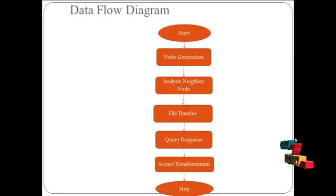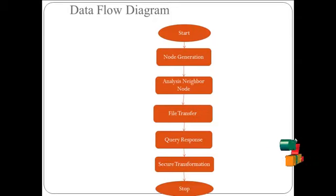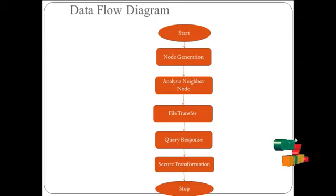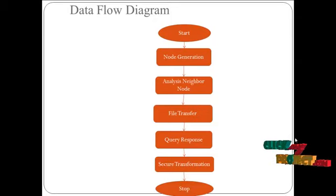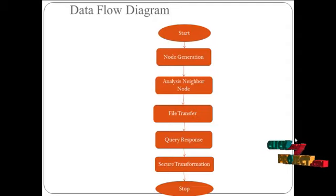Let's see the flow of the process. First, it will create node generation with multiple nodes. Then it analyzes the neighbor node for transferring a file from any one node. For file transfer, the file is encrypted and sent securely. Then in the query response, from the source to destination node, we select and transfer data through reference nodes. If a hidden node is present, traffic will occur and data will be lost due to time delay. For that, we create a secure transformation so the hidden node is avoided and data is transferred successfully.